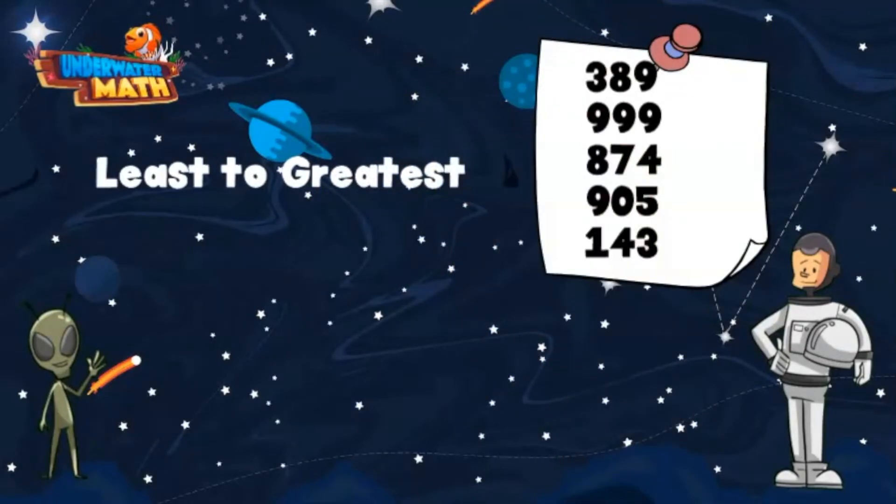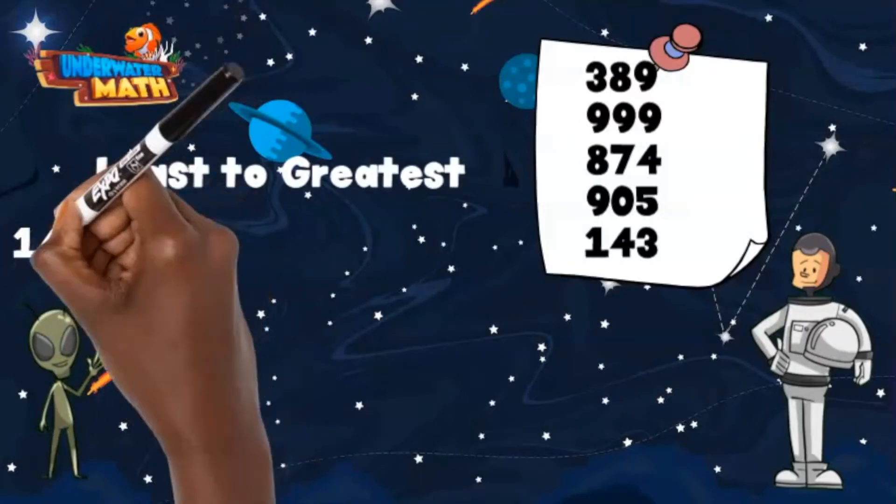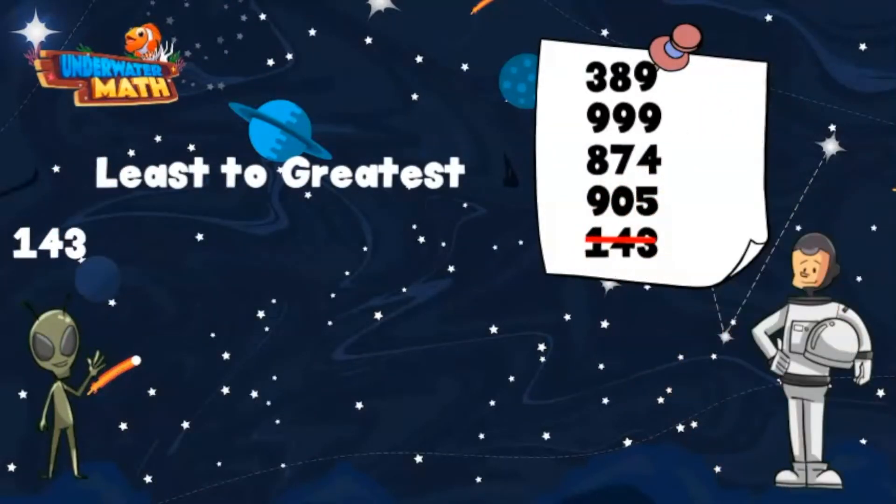Remember, least means the smallest number and greatest means the biggest number. We need to put these numbers in order from the smallest number to the greatest number. The smallest number on our list is 143, so we will put that first.